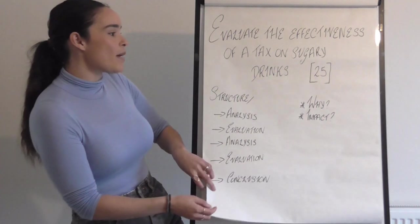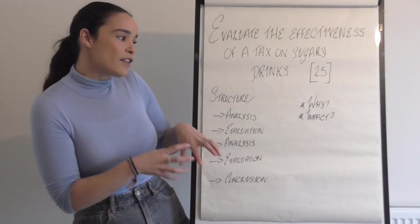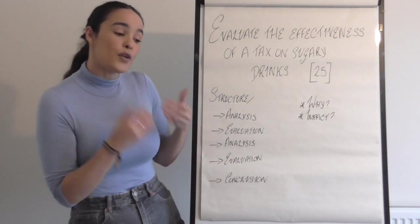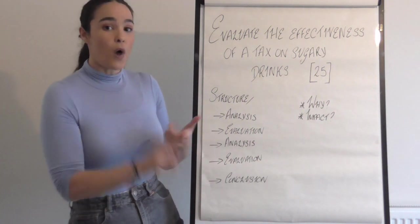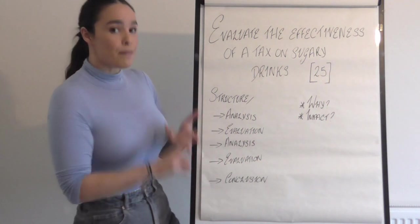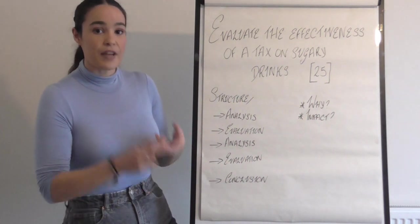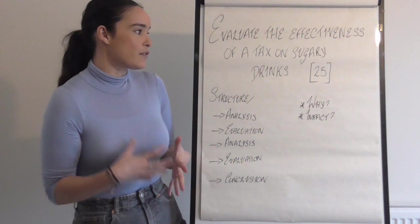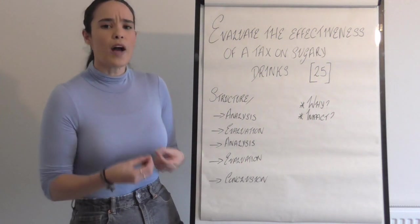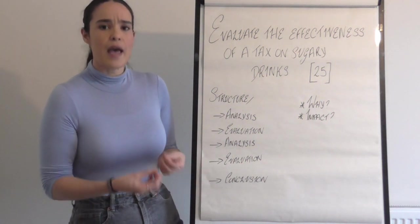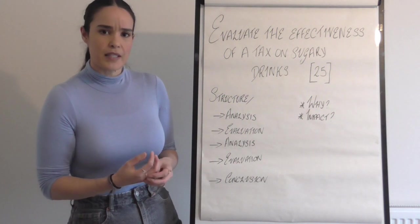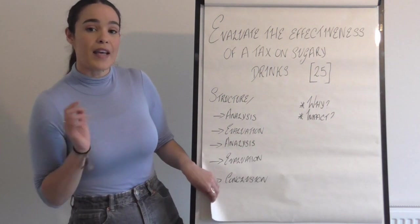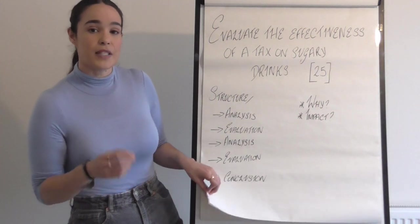Every time you get a government intervention question, you should always ask yourself: why is the government intervening, and what impact is that intervention going to have? For 'evaluate the effectiveness of a tax on sugary drinks,' the government is intervening because it's a demerit good — and that's going to help us start off.